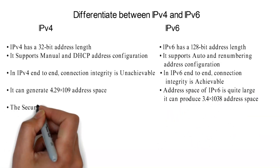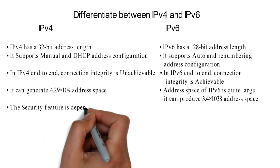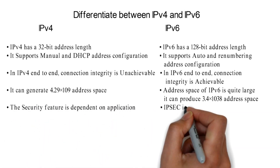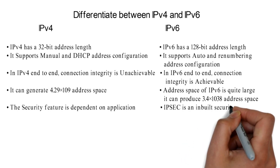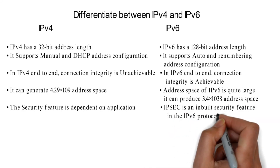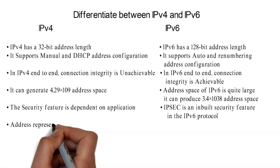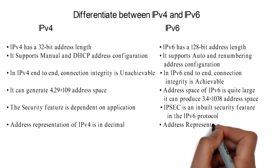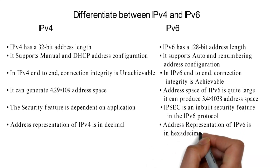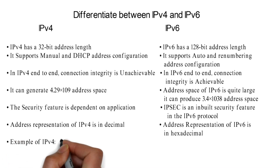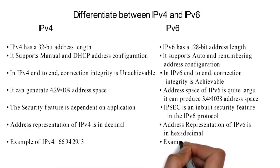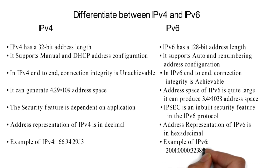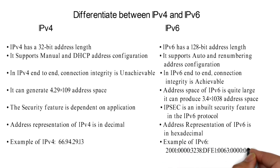The security feature of IPv4 is dependent on application; IPsec is an inbuilt security feature in the IPv6 protocol. Address representation of IPv4 is in decimal; address representation of IPv6 is in hexadecimal. Example of IPv4: 66.94.29.13. Example of IPv6: 2001:0000:3238:DFE1:0063:0000:0000:FEFF.